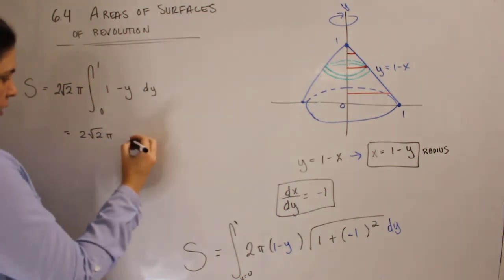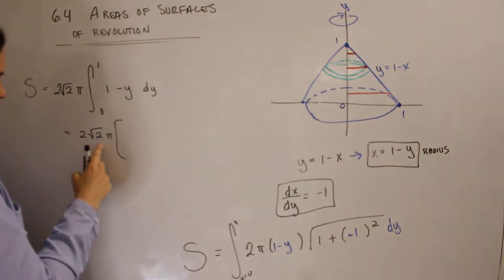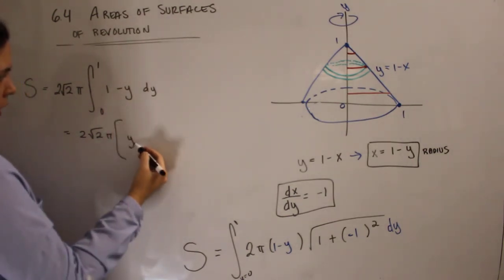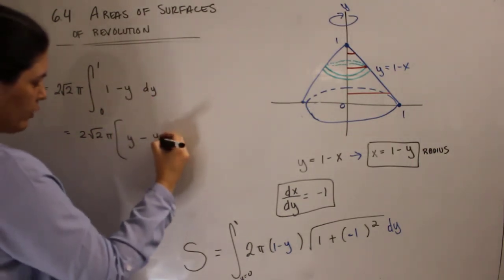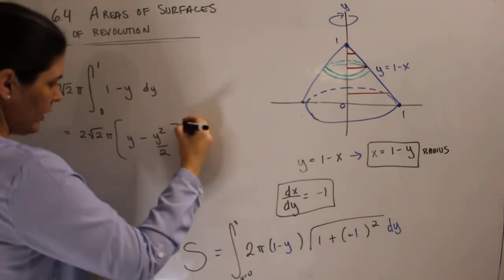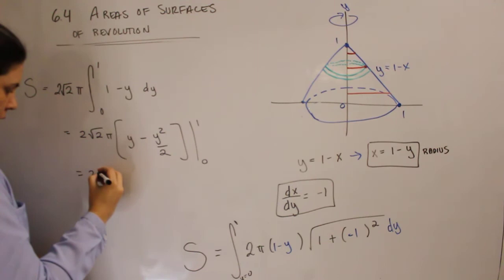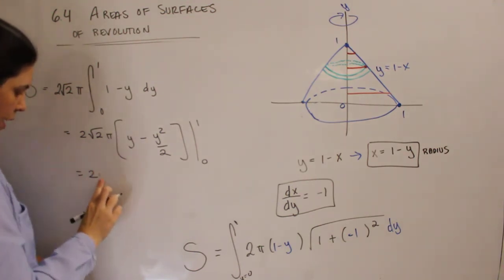This is just going to be, I'm going to kind of leave this factor out front. This is y, integral of 1 is y, minus integral of y is y squared over 2. And we'll evaluate that from 0 to 1. So I'm going to leave that 2 square root 2 pi factored out.